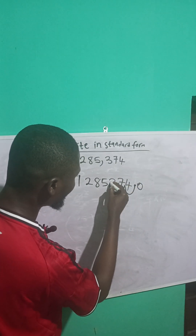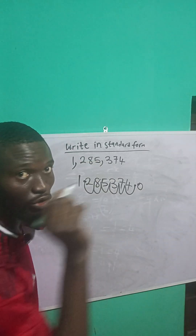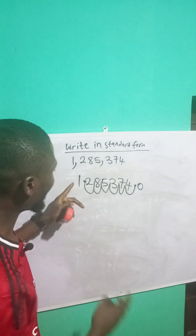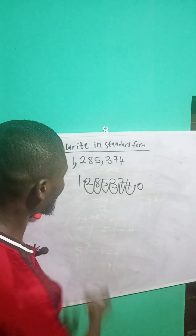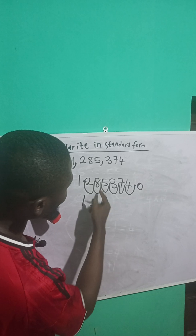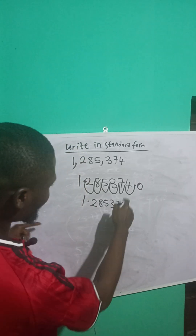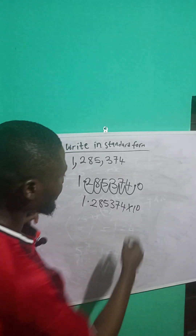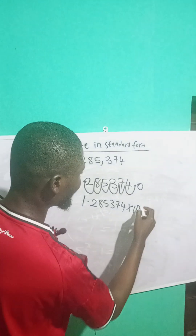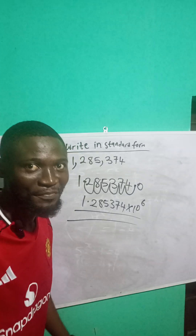One, two, three, four, five, six — once I get to here, I'll add my point and stop, because all the numbers here are whole numbers, so I have to stop at the last number. This becomes 1.285374 times ten raised to the power of how many times I moved from the decimal point — I moved six times. So this is 1.285374 × 10⁶ in standard form.